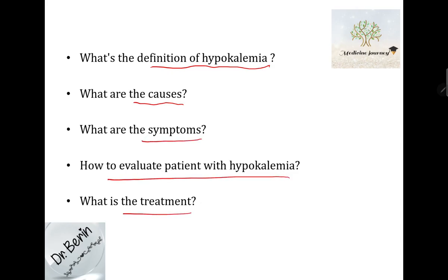Normal potassium level is between 3.5 to 5. We consider it mild hypokalemia if it's between 3 to 3.4, moderate if it's between 2.5 to 2.9, severe if it's between 2 to 2.5, and critical if it's less than 2.